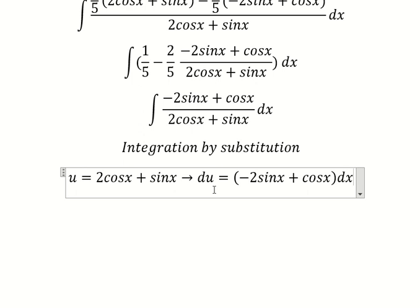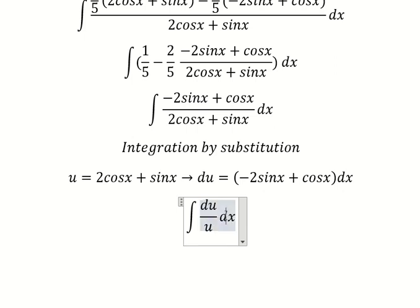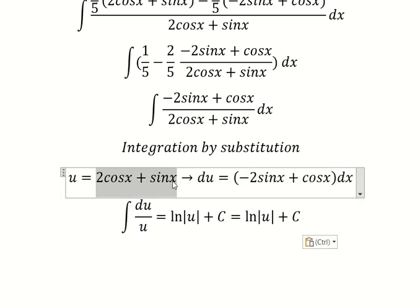We have this: this one is u, this one is u. The integration of this one gives us ln|u| + C.